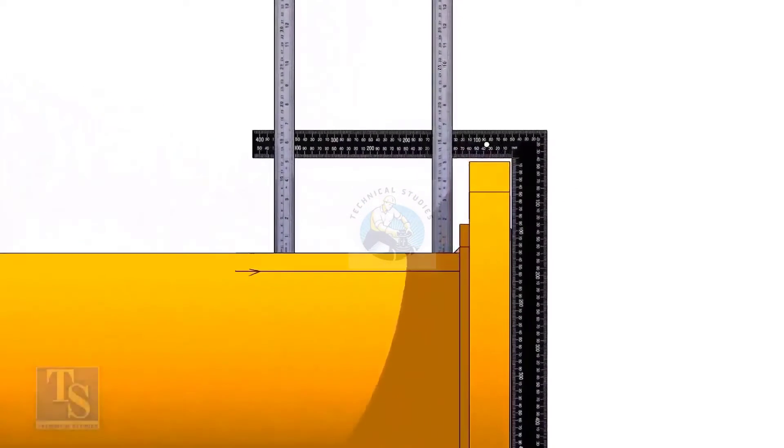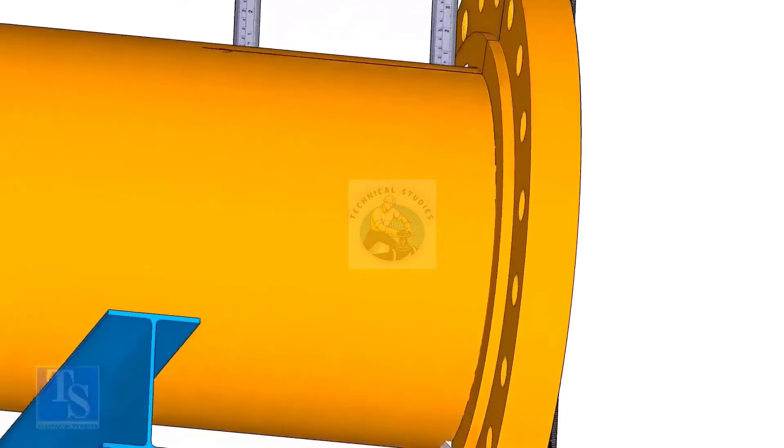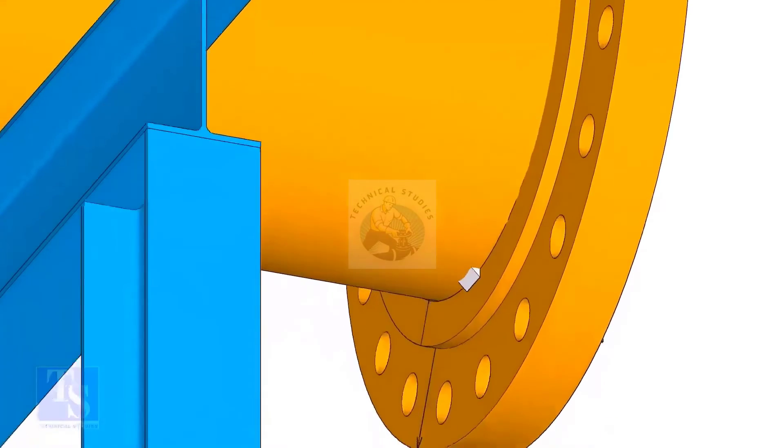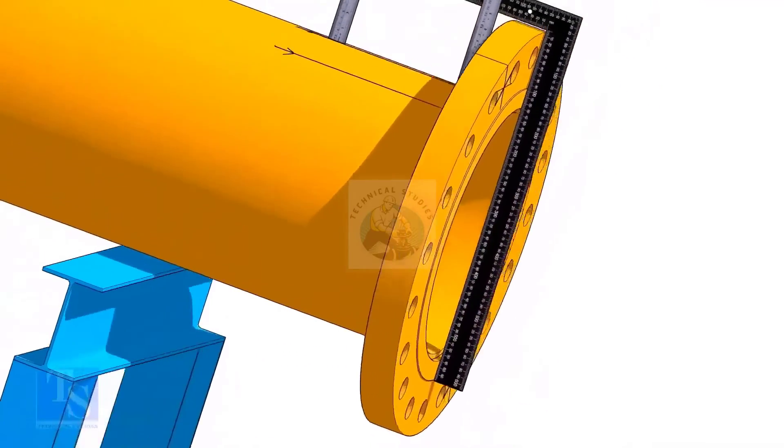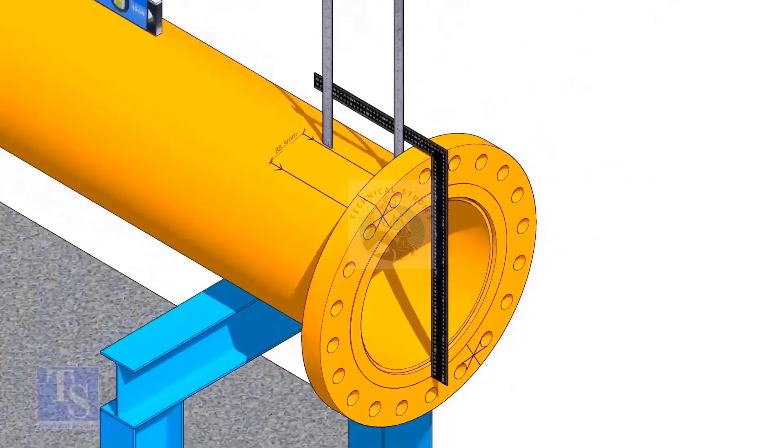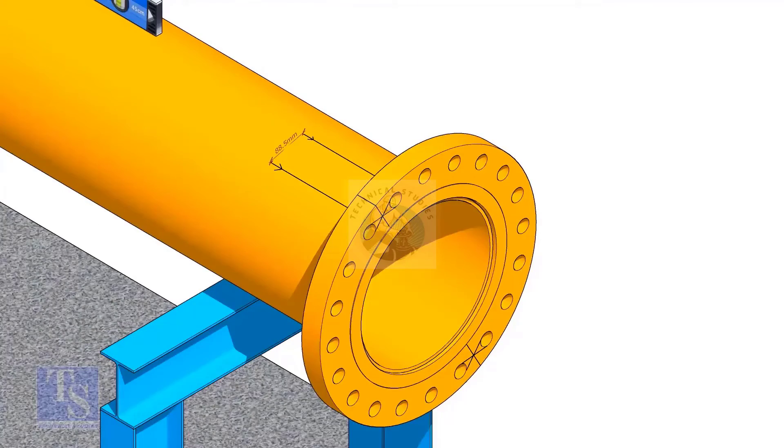Tack weld on the top of the pipe with the flange and check the squareness. If correct, tack weld at the bottom side also. Now maintain the squareness of the opposite side and tack weld on both sides.